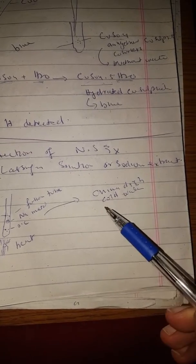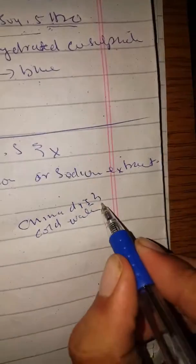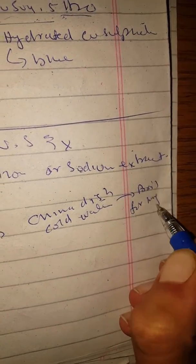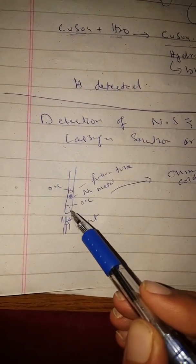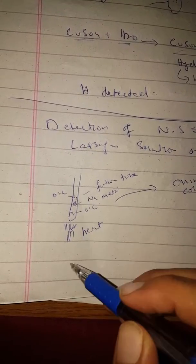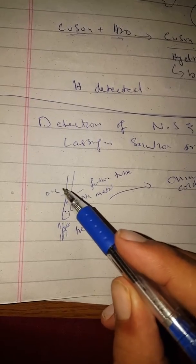When we put the fusion tube in the china dish it will break. Then we put it under the spirit lamp and we will boil it for a long time. We put the sodium metal piece and the organic compound together and heat until red hot.